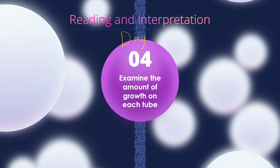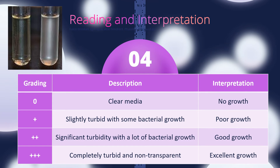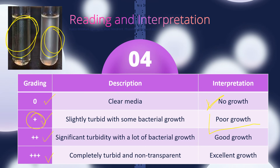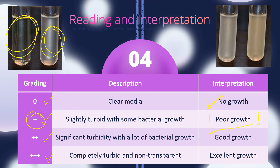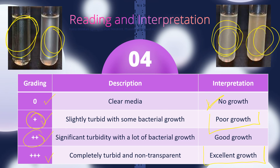Step four will be done on day two after 24 hours of incubation. We are to examine the amount of growth present on each of the nutrient broth tubes. We will follow the grading table used in the effects of chemicals on bacterial growth exercise. The grading can be 0, 1+, 2+, or 3+. A clear nutrient broth indicates no bacterial growth and is graded 0. A slightly turbid tube is given 1+, interpreted as poor growth. A tube showing significant turbidity is 2+, and a completely turbid tube indicates excellent growth of the organism, graded 3+.